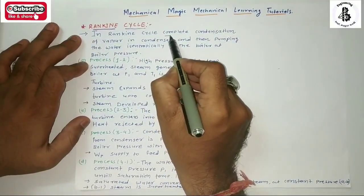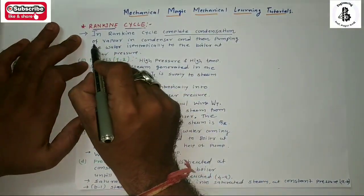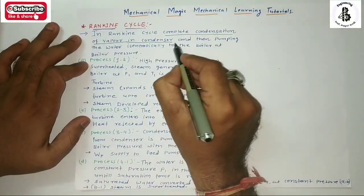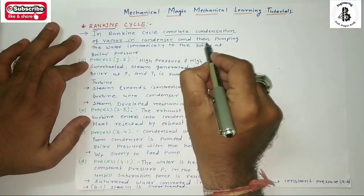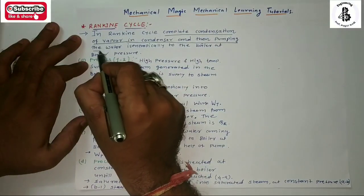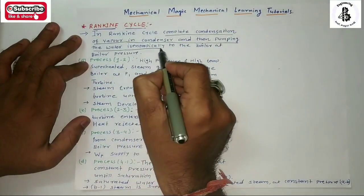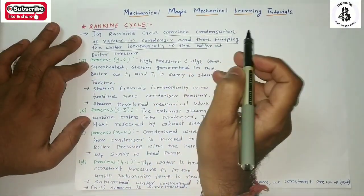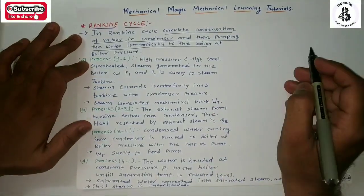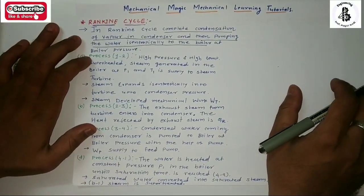Generally, in the Rankine cycle there is complete condensation of vapor in the condenser, and then that water is pumped isentropically to the boiler at boiler pressure. Let us see the line diagram of the Rankine cycle.